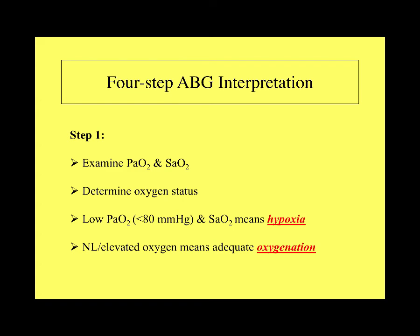Step 1: Examine PaO2 and SaO2 — the oxygen component. The oxyhemoglobin dissociation curve relates SaO2 and PaO2. A low PaO2 indicates hypoxia, and if PaO2 is low you will undoubtedly have a low SaO2. Normal levels of both indicate adequate oxygenation and oxygen content to the blood. Determine oxygen status first.